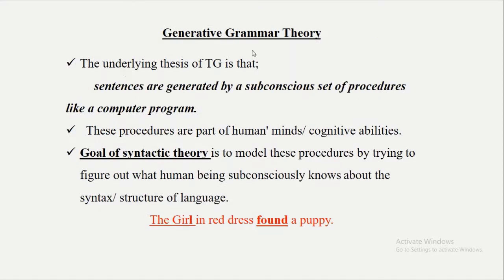The underlying theses — the crux of this theory — are that sentences are generated by a subconscious set of procedures, like a computer program. These procedures are part of human mind or cognitive abilities. This ability is innate or inborn. We are pre-programmed cognitively. When we get exposure and listen to a language, we start accepting signals, and a process starts unconsciously. This is a biological process that enables human mind to generate sentences unconsciously.